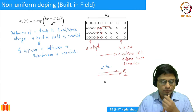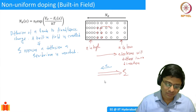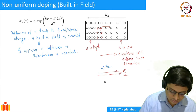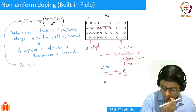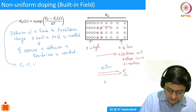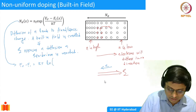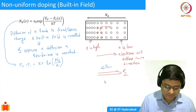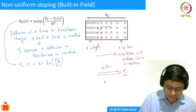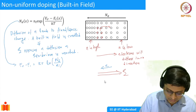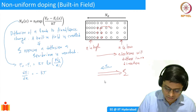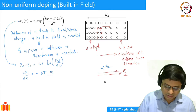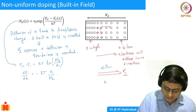This is what happens physically. To compute the electric field, from the expression given we can write E_F minus E_I equals kT times ln(N_D / N_i). And we know that electric field is simply the derivative of E_I. So we take dE_I/dx, and we get: dE_I/dx equals negative kT times (N_i/N_D) times (1/N_i) times dN_D/dx.